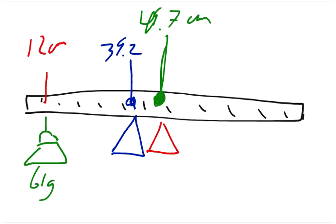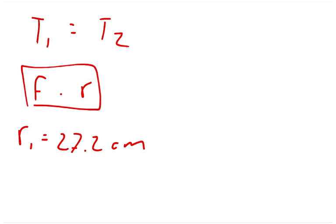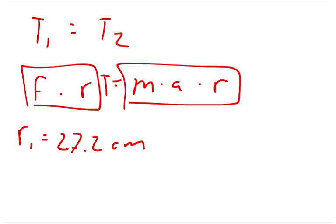So the length of this arm, from 12 to 39.2, we want to find the torque of this point right here. So the moment arm length or the radius is 39.2 minus 12, which is 27.2 centimeters. So we can say that R1 equals 27.2 centimeters. The force times the radius. We can break that down even further. Force equals mass times acceleration, times radius. This is our formula for torque. Torque equals mass times acceleration times radius.